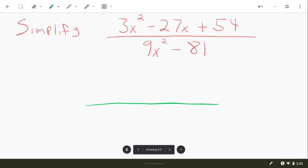So on the bottom, they have a 3 in common, but they also have a 9 in common. So we're going to factor out a 9. That's going to become an x squared. And then 9 times 9 will give us 81. There we go.